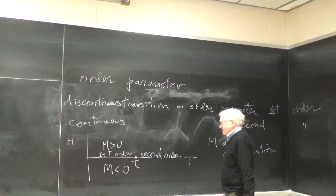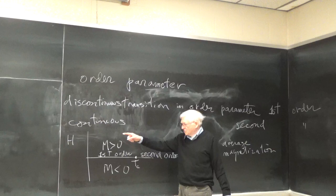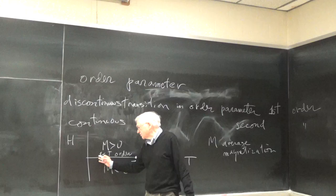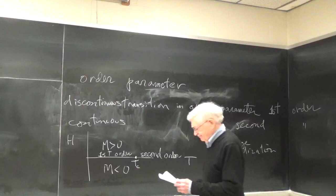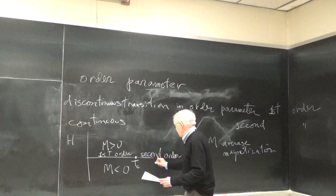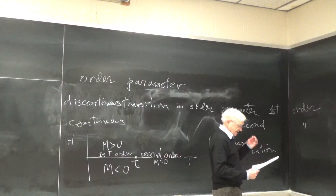The point at which that happens is called the critical point. At temperatures a little bit higher than the critical point, you can raise or lower H a little bit and the system won't change very much — it will change continuously. Whereas at temperatures below the critical point, it changes in a discontinuous way. Here we have magnetization greater than zero, and typically M equals zero for H in the vicinity of zero.